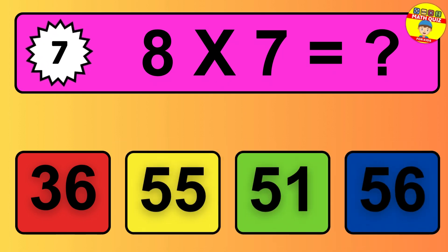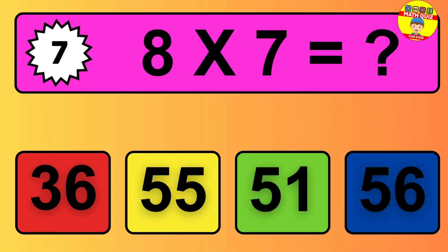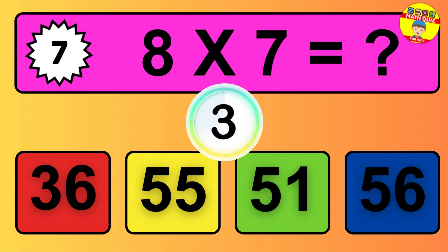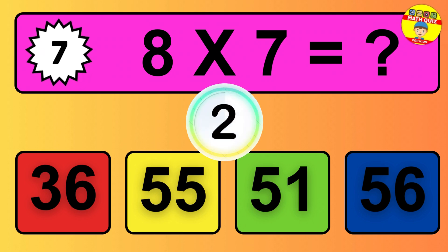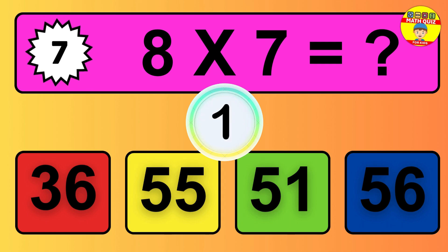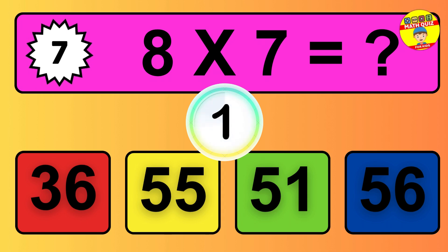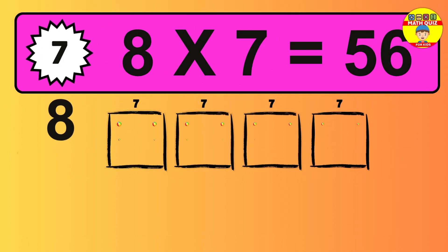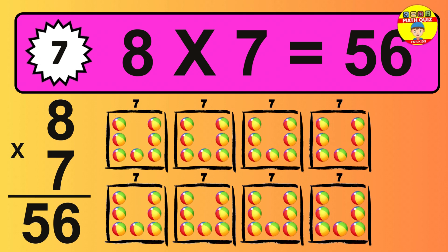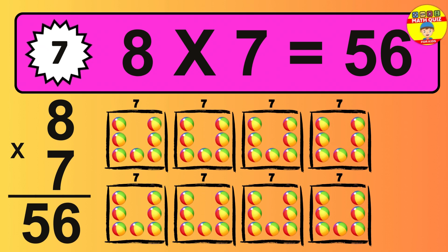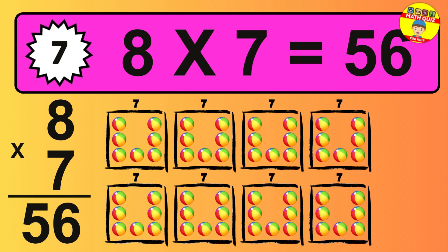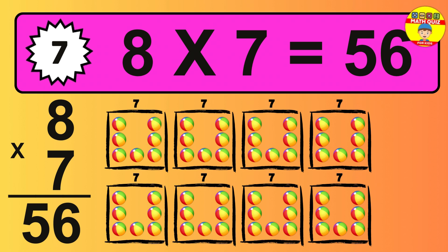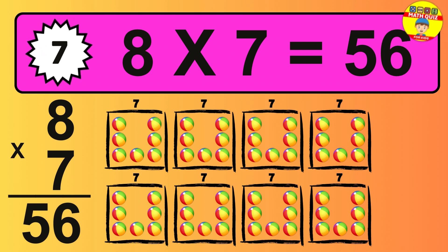Question 7. 8 times 7 equals what? The answer is 8 times 7 is 56. To calculate, we have 8 groups with 7 balls each one.